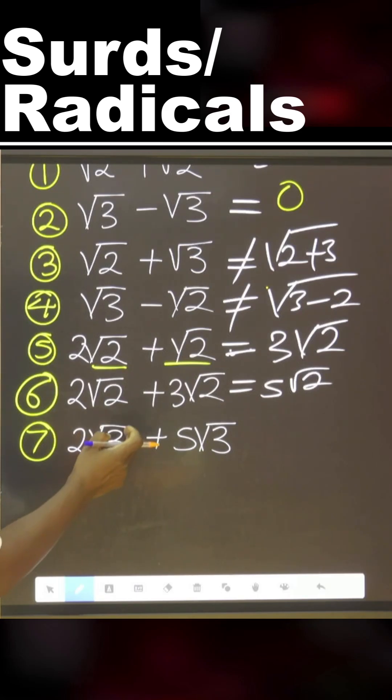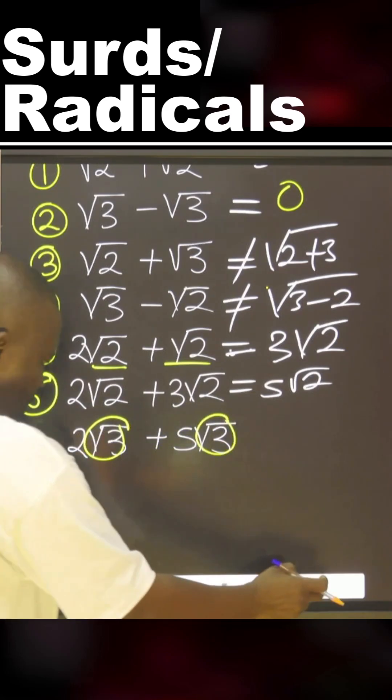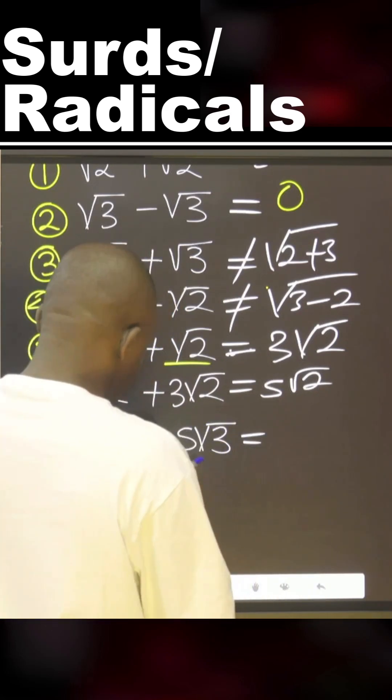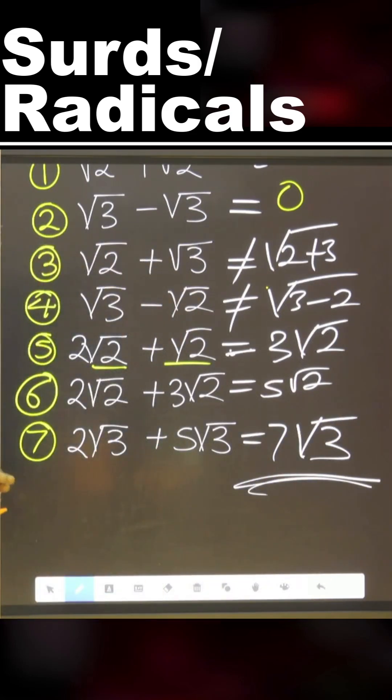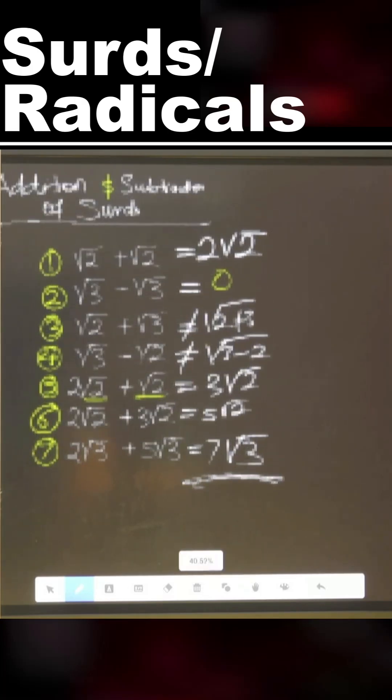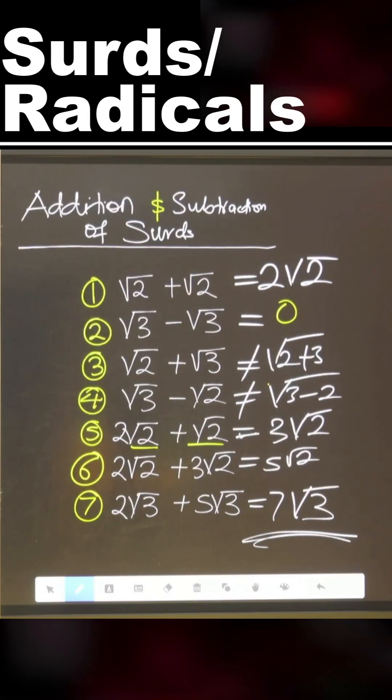This one too. Same, same. Same. So they can come together as seven. So this is addition and subtraction of surds.